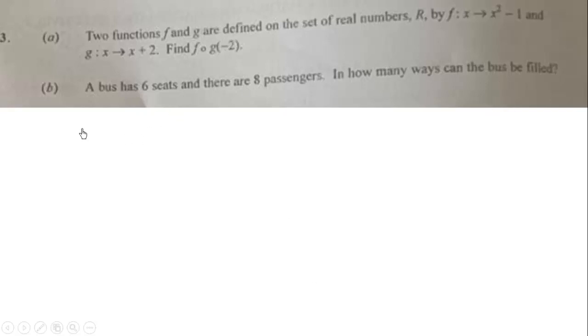The bus has six seats: first seat, second seat, up to the last seat which is the sixth seat, and there are eight passengers. The first seat can be occupied by any one of the eight passengers, then the second, the third, the fourth, the fifth, up to the last seat which is the sixth seat.